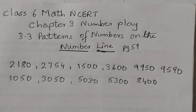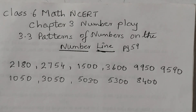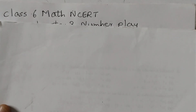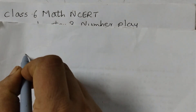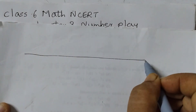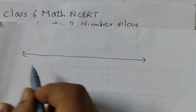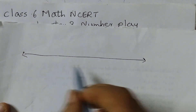You are given a number line and you need to place some numbers in their appropriate positions on the number line. So first you need to draw a number line. For that, take your ruler and draw a line like this, then mark points.